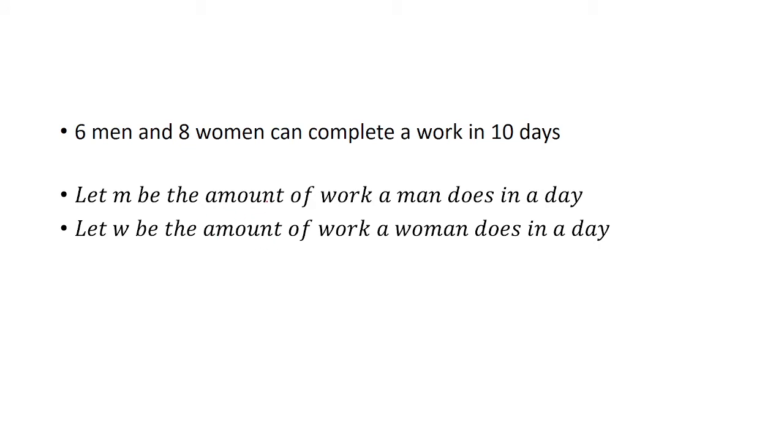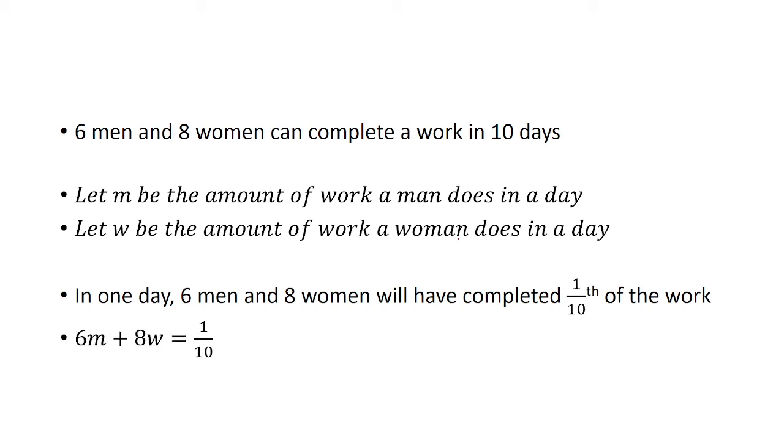Now we can come up with an equation. Because in one day, 6 men and 8 women will have completed 1 tenth of the work, so then it's going to take them 10 days to finish that. So 6 times m plus 8 times w is equal to 1 tenth. This is in context of just one day.